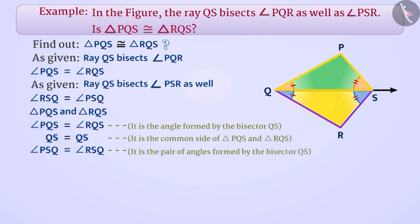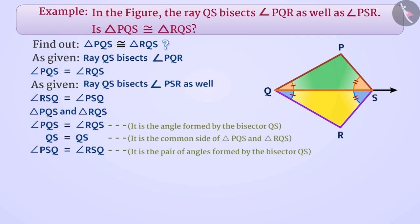Since two angles — angle PQS and angle PSQ — and the included side QS of triangle PQS are equal to the corresponding angles — angle RQS and angle RSQ — and the included side QS of triangle RQS, therefore under the ASA congruence criterion, both these triangles are congruent.